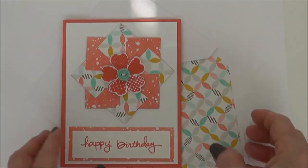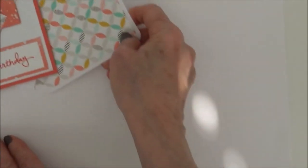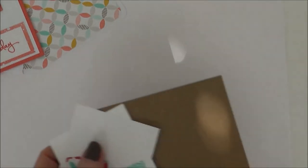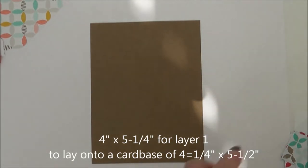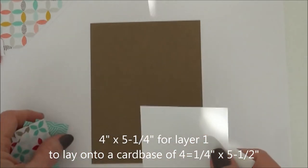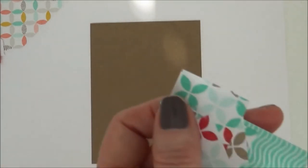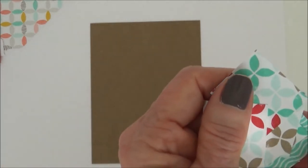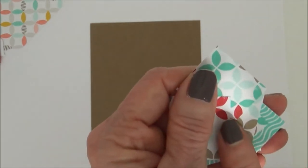Okay, so we're going to get started. I'm just going to use some scraps here, four by five and a quarter, because that would be the top layer of the card. Then you're going to need two pieces, depending on the colors that you use.